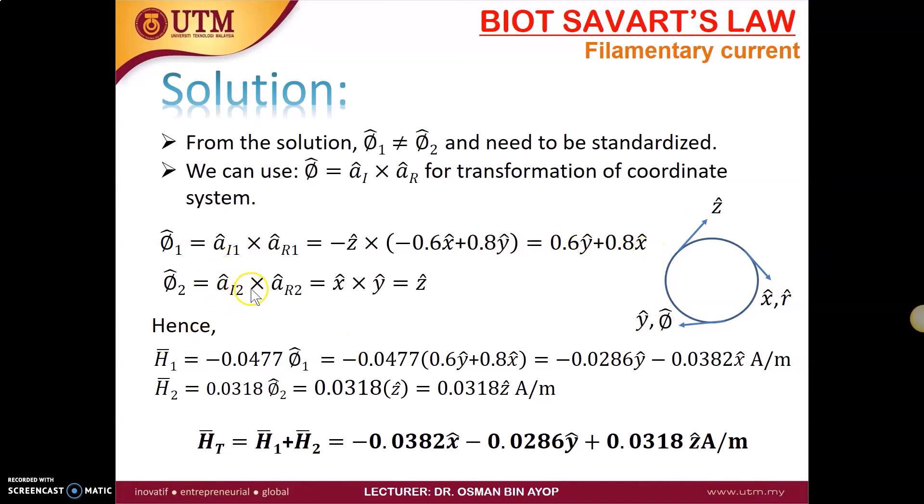For the second phi, we got direction of the second current is towards X directions. And we have to cross product with a normal vector from the source to your point of interest, which is Y. So the X cross Y, X cross Y, here you got Z. So we put the phi inside the original H that we calculate. We got the final answer to be this one. And the H₂ to be this one. So you have to add these two together. So the total H at the point of interest is equal to H₁ plus H₂ equal to negative 0.0382X minus 0.0286Y plus 0.0318Z ampere per meter.